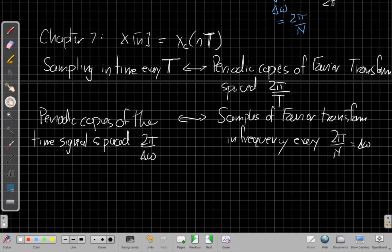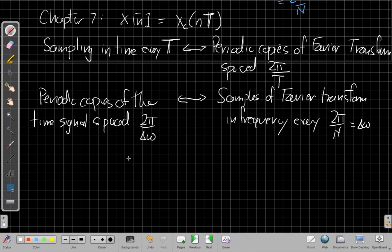The duality says if I'm making samples in frequency, I'm going to be making periodic copies of the signal in time. Take the time signal, and we'll make copies of that. And they'll be spaced every 2 pi over delta omega. In fact, the relationship works even more precisely. That would be 2 pi over, if I plug in for delta omega here, and I can take this value here and plug it in for delta omega, 2 pi over N. And 2 pi's cancel. The N comes up to the numerator.